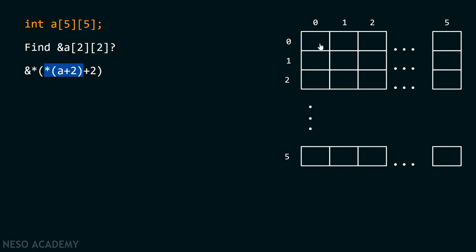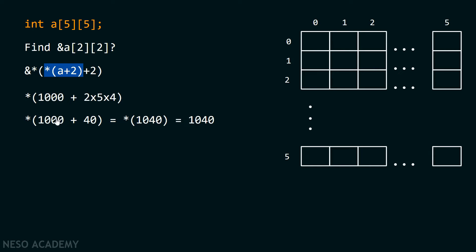Each element is four bytes long because the data type is int — the assumption is that integer takes four bytes of memory. Therefore ten must also be multiplied by four. So A + 2 is equivalent to 1000 plus (2 × 5 × 4). Assuming the base address is 1000, I add 2 × 5 × 4 = 40, giving 1040. Dereferencing 1040 gives me the address of the first element of that third one-dimensional array. So *(A + 2) = 1040.